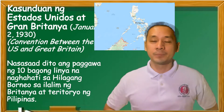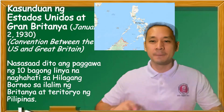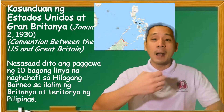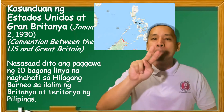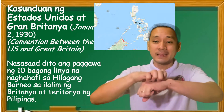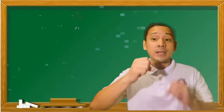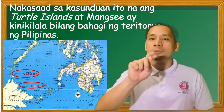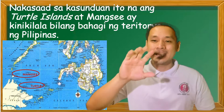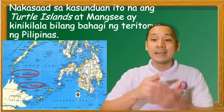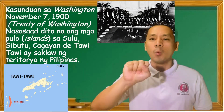Kasunduan ng Estados Unidos at Gran Britannia noong January 2, 1930 — Convention between US and Great Britain. Nasasaad dito ang paggawa ng 10 bagong linya ng paghahati sa Hilagang Borneo sa ilalim ng Britanya at teritoryo ng Pilipinas. Nakasaad sa kasunduan ito na ang Turtle Islands at Mang Sea ay kinikilala bilang bahagi ng teritoryo ng Pilipinas.